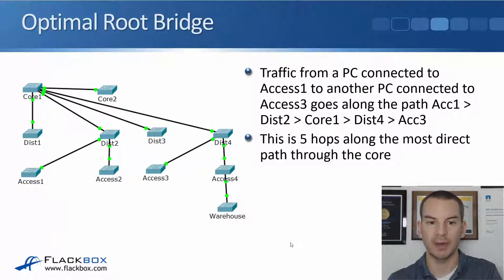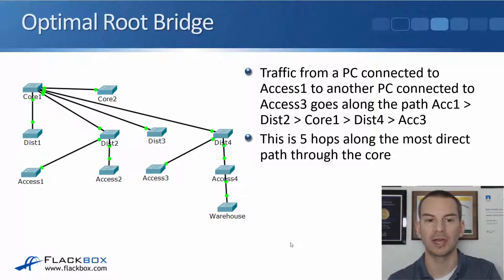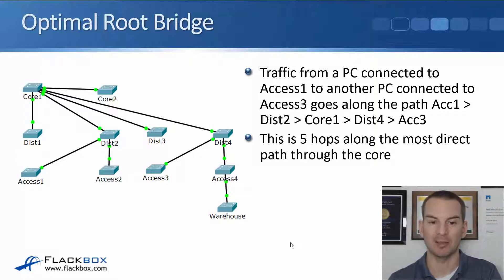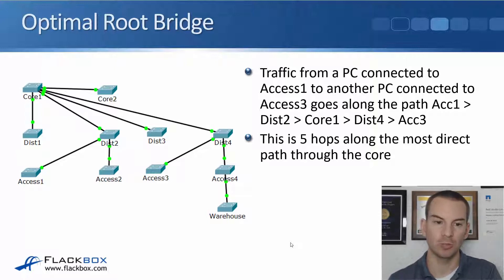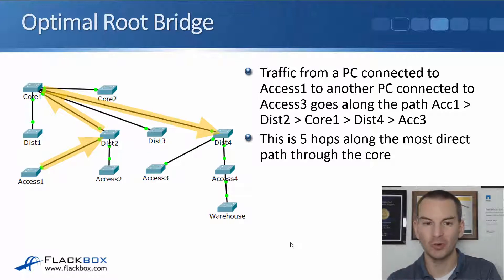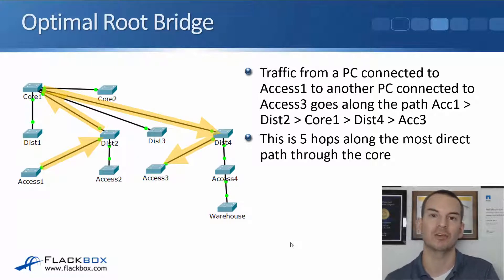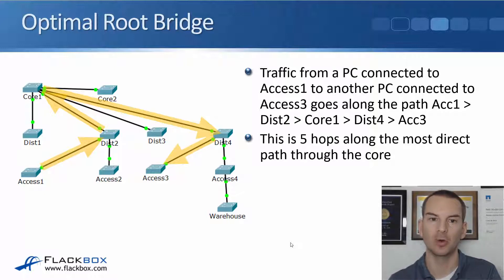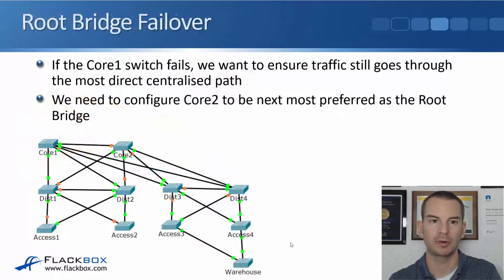If we now look at the spanning tree, that's what you can see in the diagram here. We've set the core bridge as the root bridge, and I've taken out all of the links that have got blocking ports. If we now send traffic from a PC connected into Access 1, sending it to another PC connected to Access 3, the path it will go along is Access 1 to Distribution 2 to Core 1 to Distribution 4 to Access 3. So it's only five hops compared to the seven hops before — going along the most direct path through the core. That is much more optimal root bridge placement.